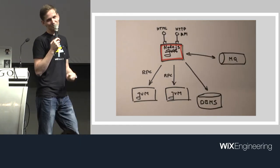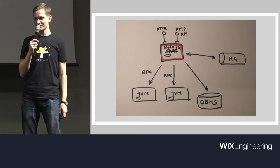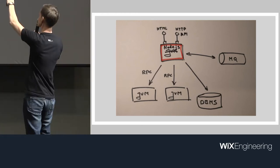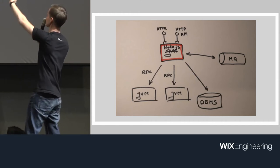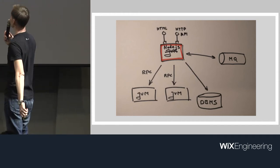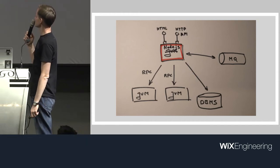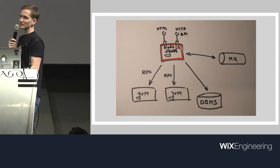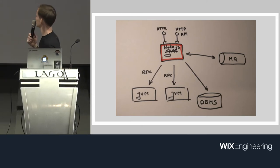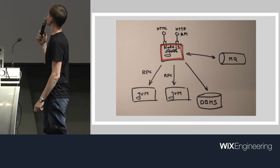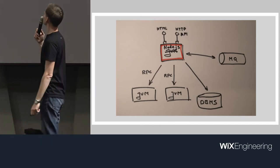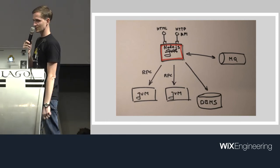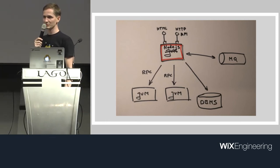Reality is different — you cannot tell engineers not to do stuff. Now we have a situation where the front-facing part is covered by Node.js and we have database access — if you consider Mongo a database, but that's another question — and message brokers seem like they're coming in too.